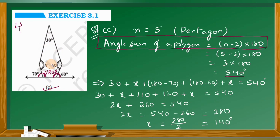So now we have all the angles. Adding them: 30 plus x plus 110 plus 120 plus x is equal to 540 degrees. So 2x plus 30 plus 110 plus 120 equals 540. 30 plus 110 is 140, plus 120 is 260. So 2x plus 260 equals 540. Therefore 2x is equal to 540 minus 260, which is 280.